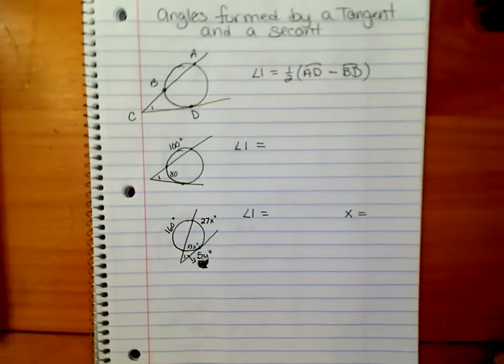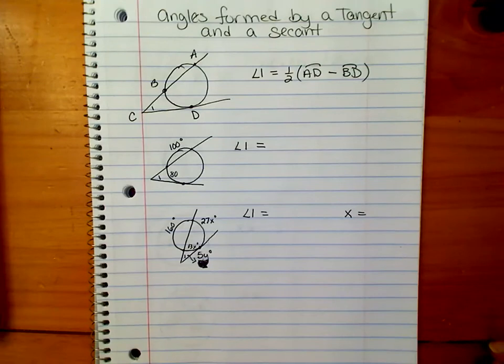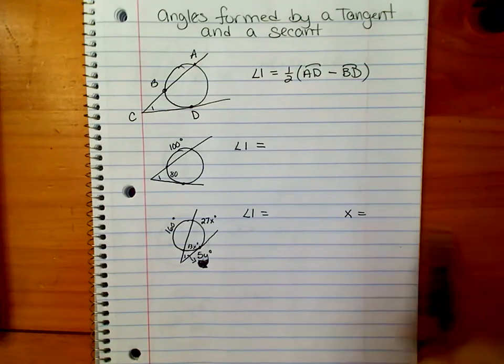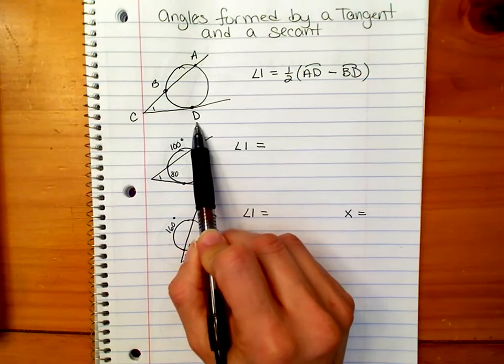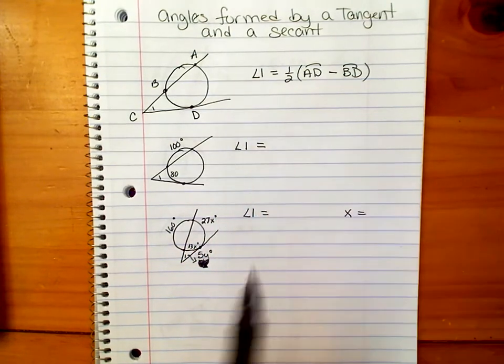This lesson is on angles formed by a tangent and a secant in a circle. You see the tangent that just touches a circle at the point of tangency CD and the secant that goes through the circle.